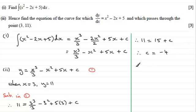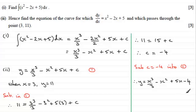So I can just substitute the constant c back into equation 1, into 1. And if I do that, I end up with the equation y equals x cubed over 3 minus x squared plus 5x. And then for plus c, we just have minus 4.